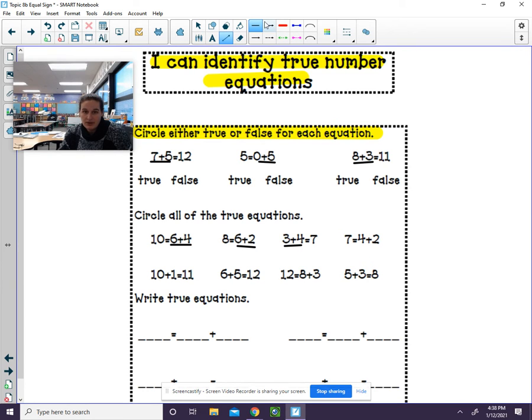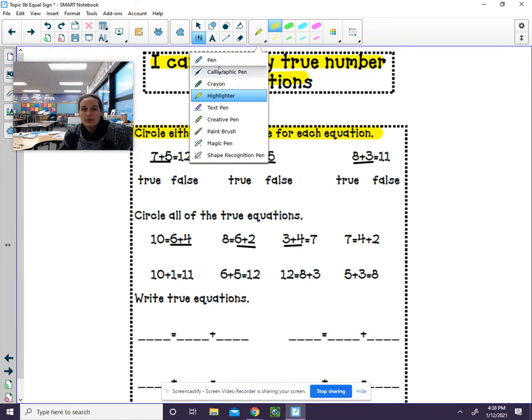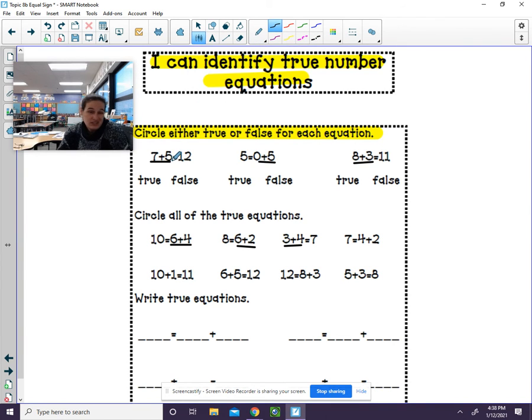So underline wherever that adding part is. I'll even do it down here in a couple for you. I want you to do the rest on your own. Underline where the adding part is. Below the part where you need to add, write what you're thinking. What's seven plus five? If you're not sure, you can always use your cubes. You could also use a number line. Seven plus five is twelve though. Twelve equals twelve. You decide, circle true or circle false.